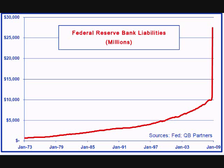If the country was in a recession, the Fed may want to lower reserves, which will increase the money supply to try to increase spending and reduce unemployment. If the economy was booming and inflation was a concern, the Fed may want to increase reserves, which will lower the money supply to try to reduce spending.